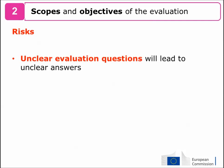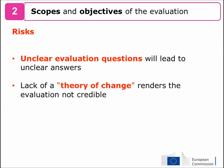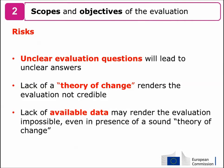An unclear set of evaluation questions will lead to unclear answers. In the case of the training program example, if you do not refer to plausible outcomes such as employability and human capital accumulation, you will not receive specific answers. The lack of a theory of change renders the evaluation not credible. For example, if the training program aims to help individuals find a higher-skilled job, the contractors may find a positive effect on employment rates but without exploring skills mismatch. And the lack of available data may render the evaluation impossible, even in the presence of a sound theory of change.